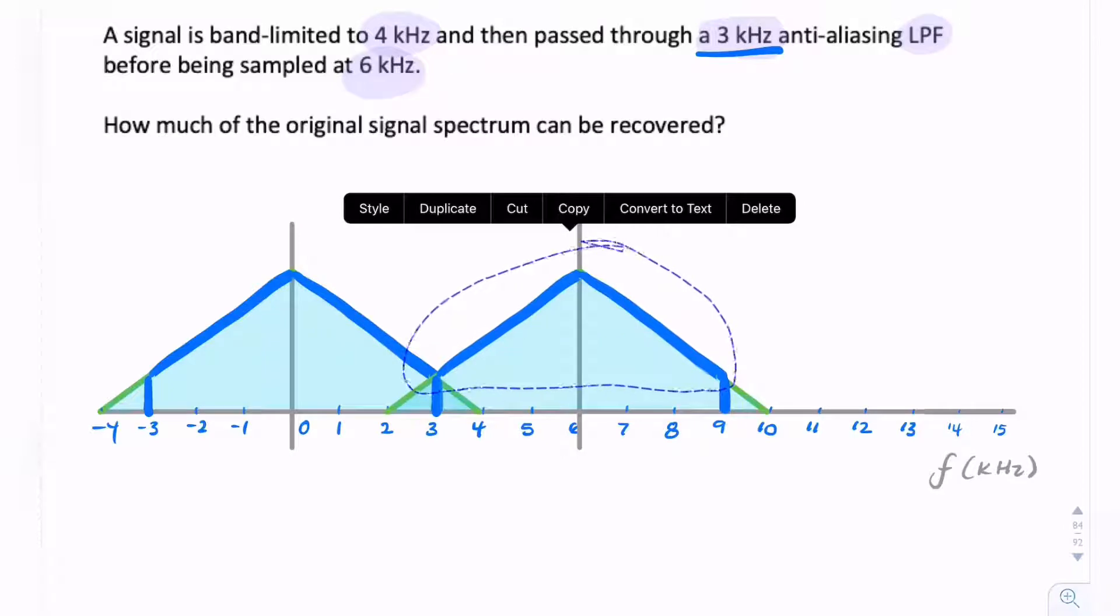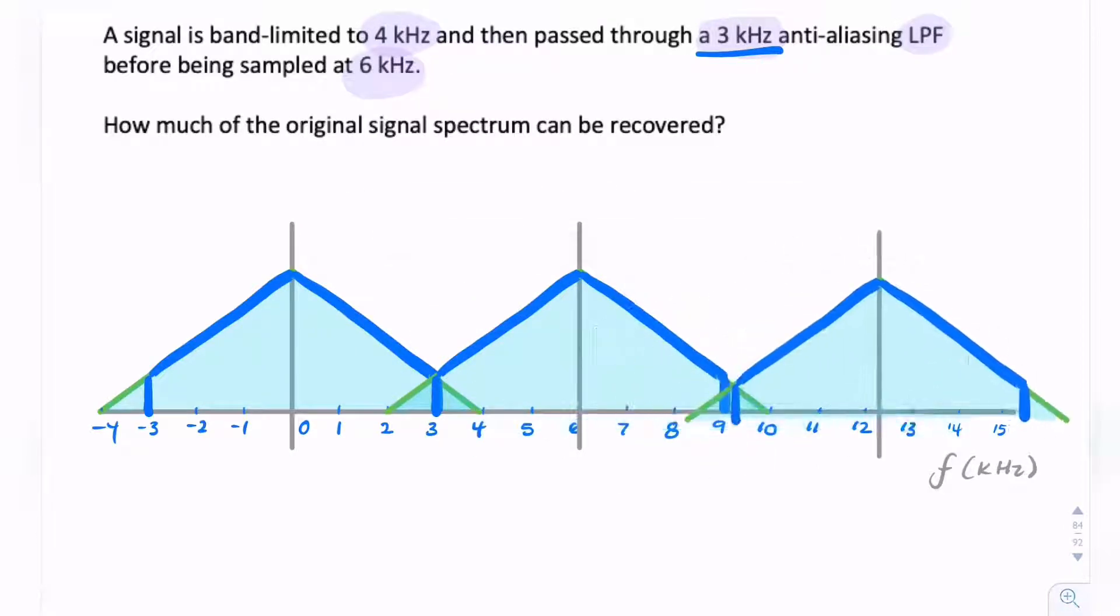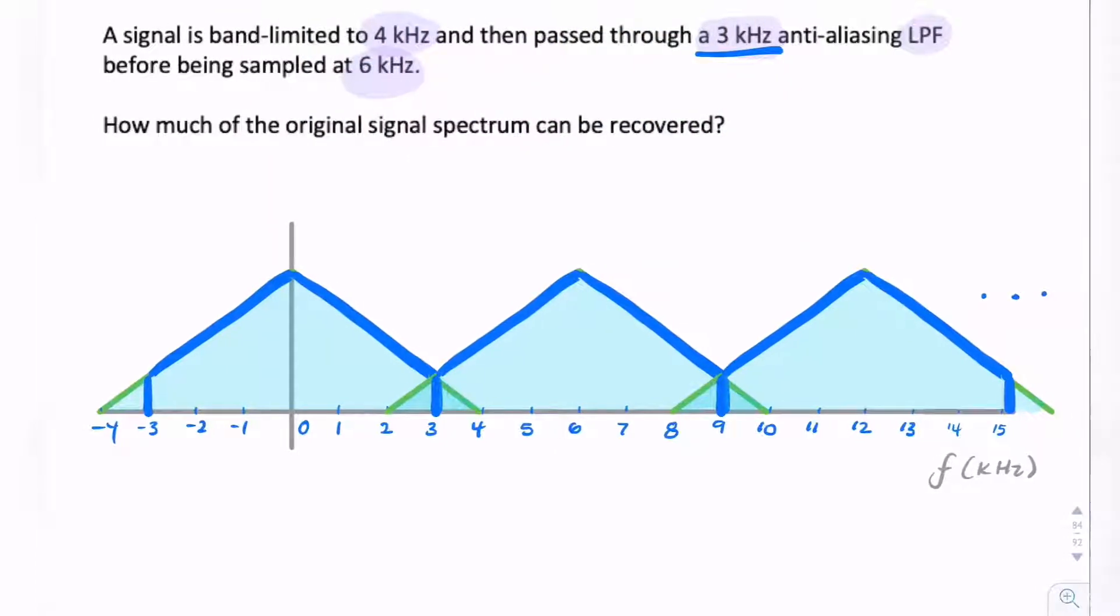So my replicas should sit at 6, 12, 18, etc., and minus 6, minus 12, minus 18. These replicas continue for infinity in both directions.